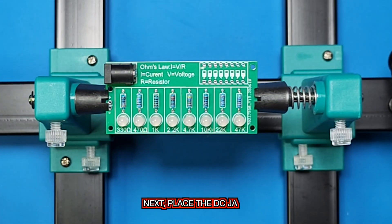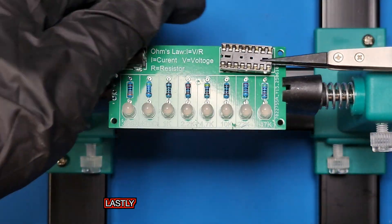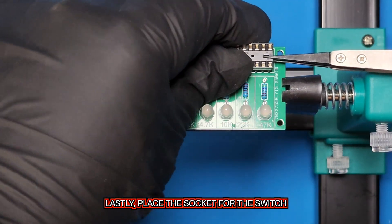Next, place the DC jack. Lastly, place the socket for the switch.